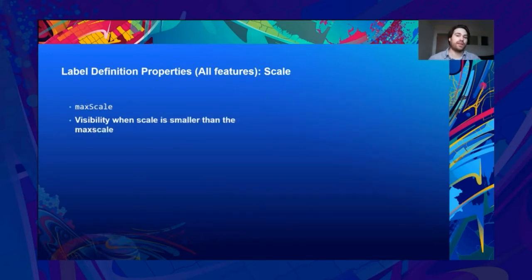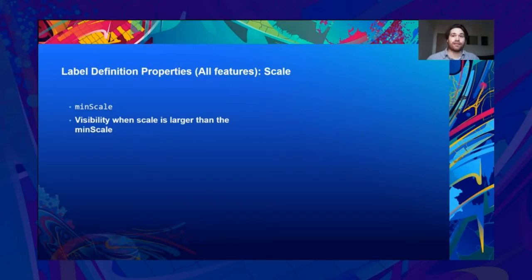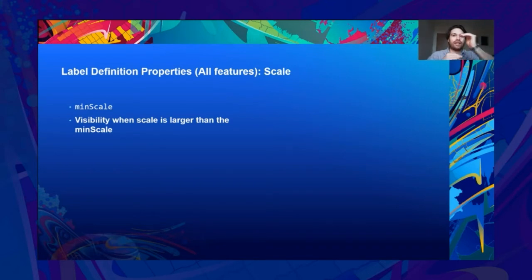Max scale: visibility when the current scale is smaller than the max scale. This is coupled with the min scale, which is visibility when the current scale is larger than the min scale. If the current scale is between these two values, the label will be placed. It's handy when you want to create a level of detail — for example, revealing lesser towns when zoomed further into the map.